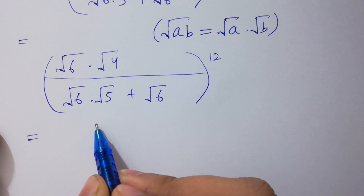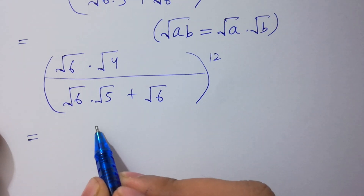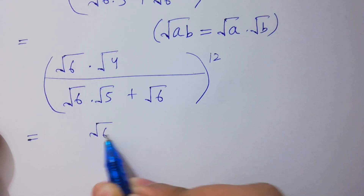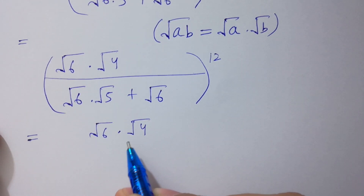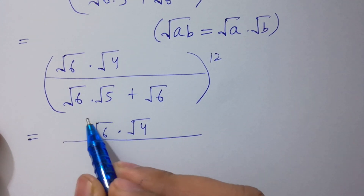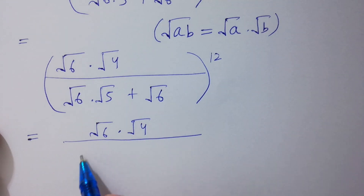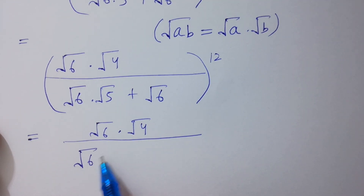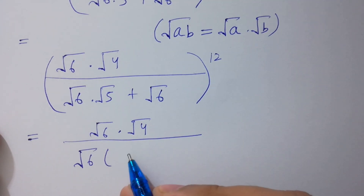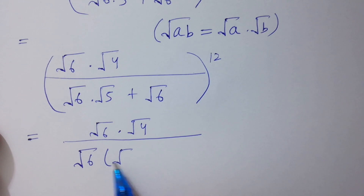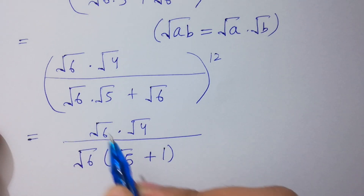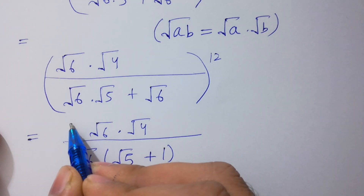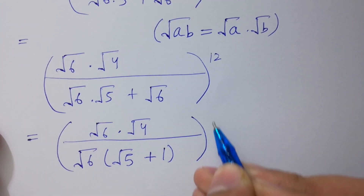Square root of 6 times square root of 4, over — square root of 6 is common in the denominator — we have square root of 6 times (square root of 5 plus 1), to the whole power 12.